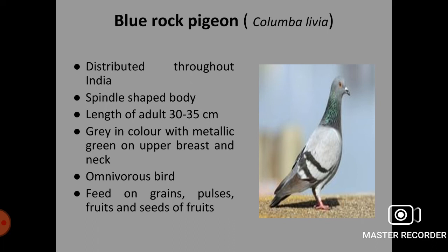Next pestiferous bird is the blue rock pigeon, Columba livia. It is distributed throughout India. The body is spindle-shaped and the adult length is 30 to 35 cm. The colour is grey with metallic green on the upper breast and neck area. It is an omnivorous bird which feeds on grains, pulses, fruits and seeds.